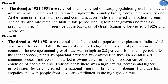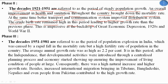Phase 2, between 1921 and 1951, is referred to as a period of steady population growth. An overall improvement in health and sanitation brought down the mortality rate, while better transport and communication improved the distribution system. The crude birth rate remained high, leading to a higher growth rate than the previous phase — impressive given the backdrop of the Great Economic Depression of the 1920s and World War II.